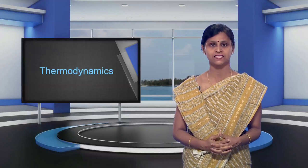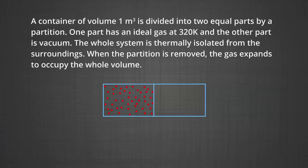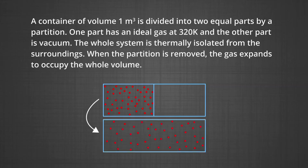The first question is based on internal energy. A container of volume one meter cube is divided into two equal parts by a partition. One part has an ideal gas at 320 Kelvin and the other part is vacuum. The whole system is thermally isolated from the surroundings.